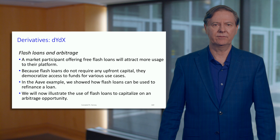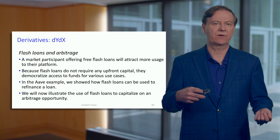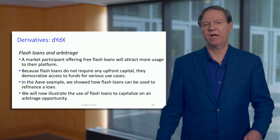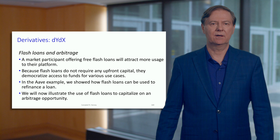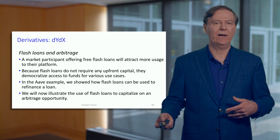Let's talk about the use of a flash loan. One of the main uses is arbitrage, which comes in many different forms. It might be prices that are different on different exchanges, or lending and borrowing rates that differ between different protocols. Arbitrage plays an important role in the financial system in that it drives prices to where they should be — if the price is too high somewhere compared to somewhere else, arbitrage will equalize those prices.